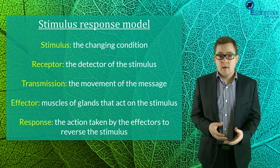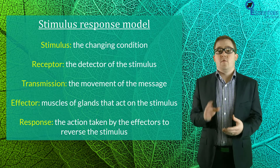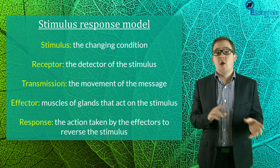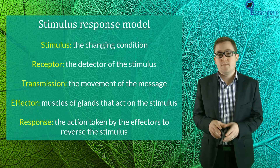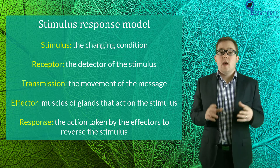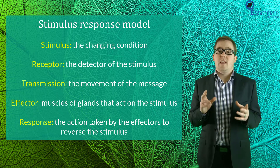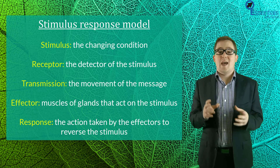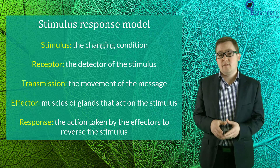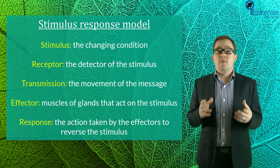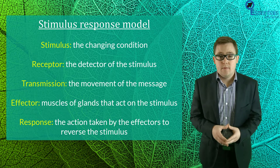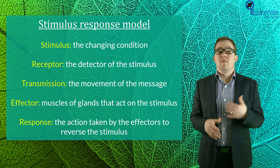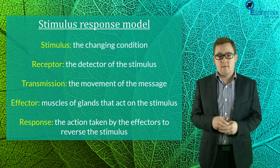Transmission, which refers to the relay of messages about the stimulus inside the body via nerves or hormones; effector, which refers to either muscles or glands which will need to act on the stimulus; and finally response, which refers to the action taken by the effectors to reverse the stimulus.